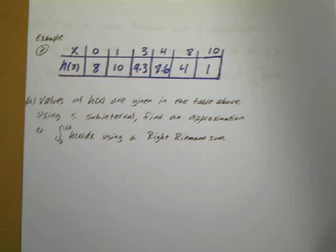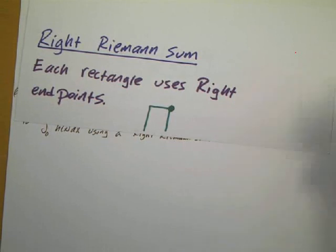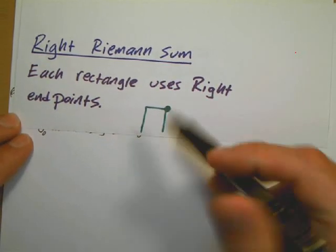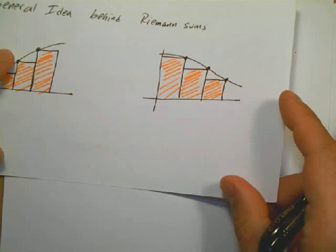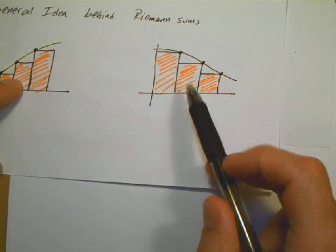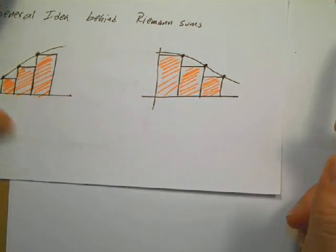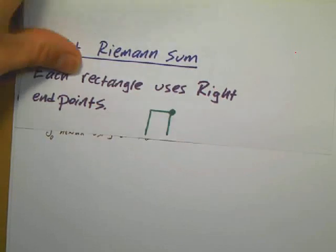Example two calls for a right Riemann's Sum. A right Riemann's Sum is where each rectangle uses right endpoints — like in the very beginning where I made a sketch of rectangles touching on the right. That's what a right Riemann's Sum is.